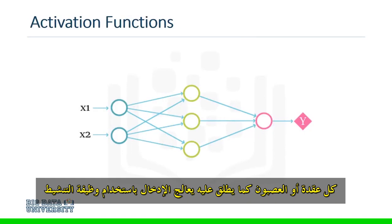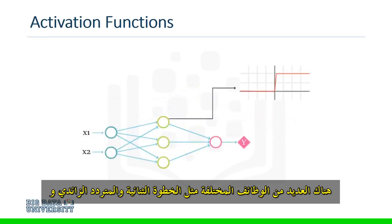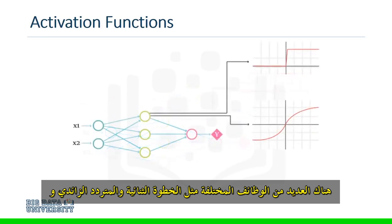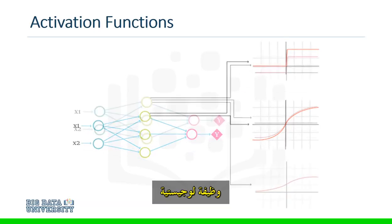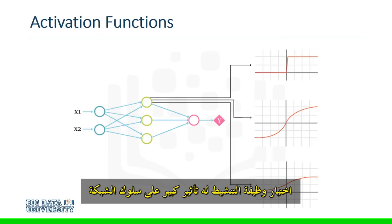Each node, or neuron as it's called, processes input using an activation function. There are many different functions, like the binary step, the hyperbolic tangent, and the logistic function. The choice of activation function has a big impact on the network's behavior.